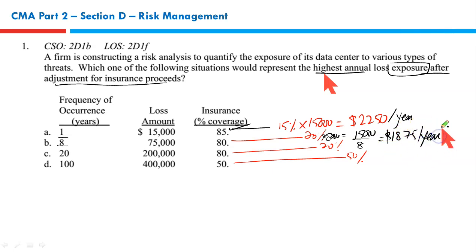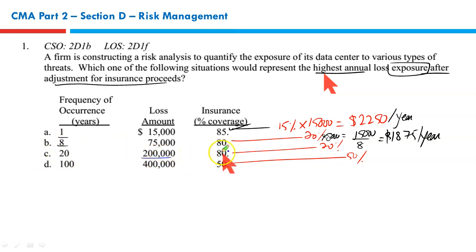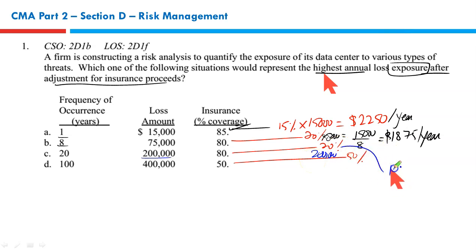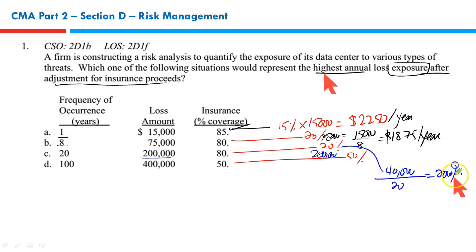Because we have to bring them to the same base — that's the only way we can make a comparison on a per-year basis. Occurrence C: probable loss could be $200,000, 80% is covered, 20% is not covered. $200,000 times 20% is $40,000. $40,000 is the probable loss over 20 years, so on a yearly basis it is $2,000 per year.